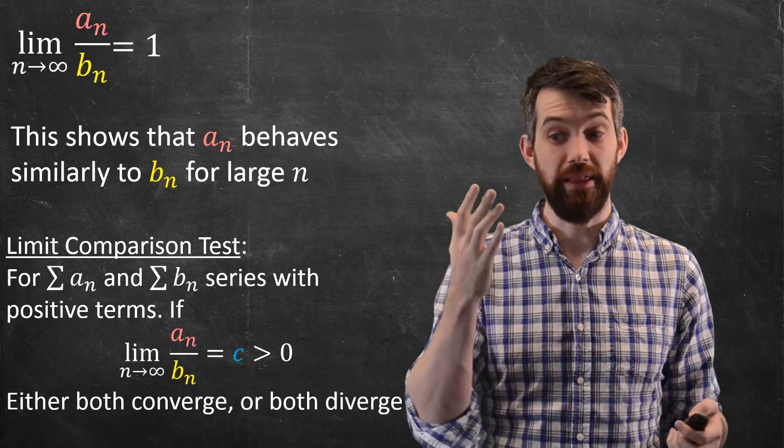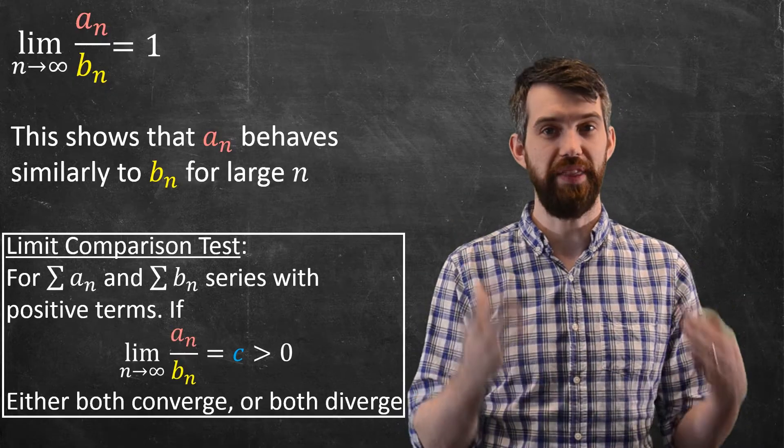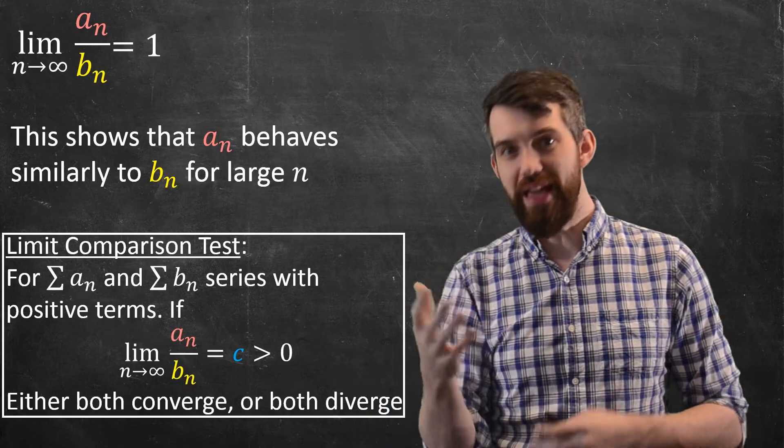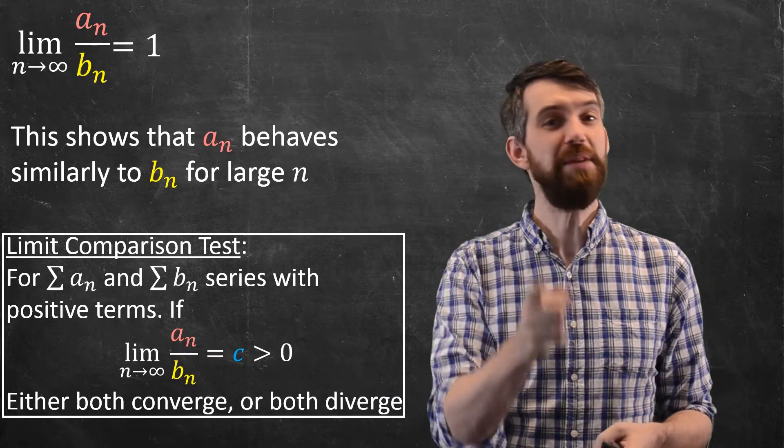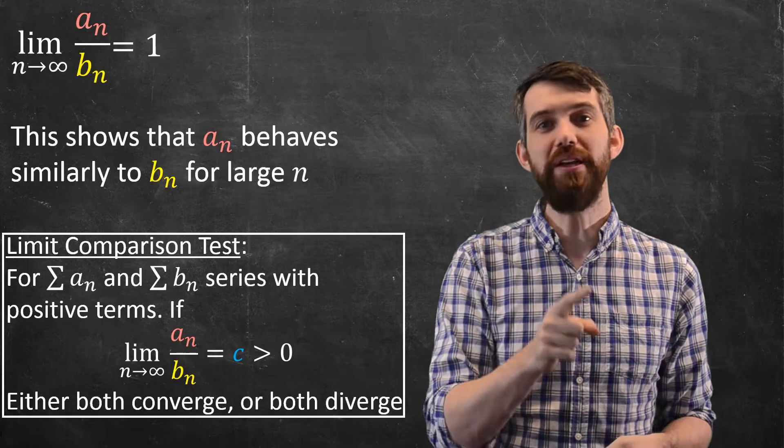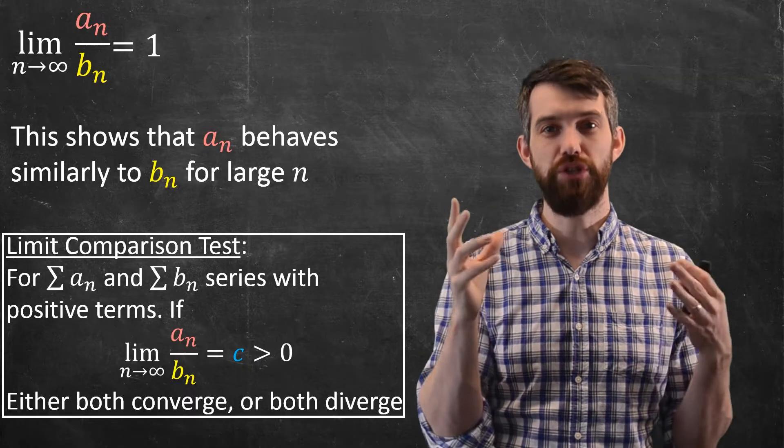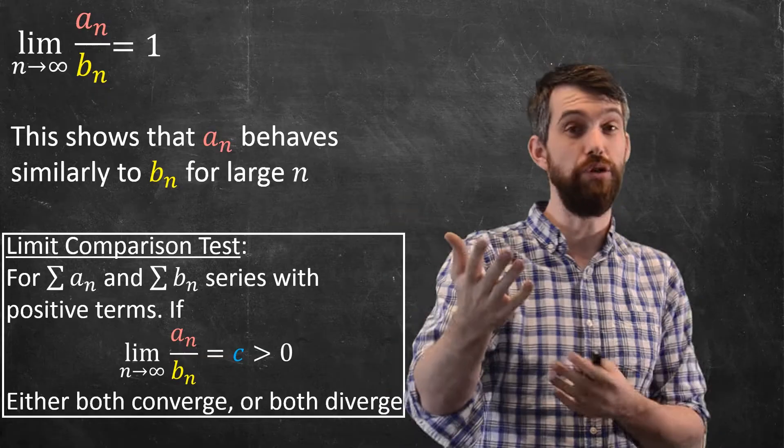More formally, we can state the limit comparison test. It looks like this. It says if you've got a series of a_n's, a series of b_n's, they both have positive terms, and it doesn't need to be equal to 1. If the limit of the quotient of those terms is just any positive number, it could be 2, it could be a half, whatever,